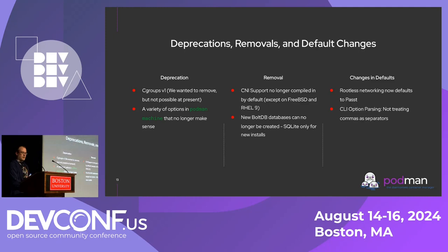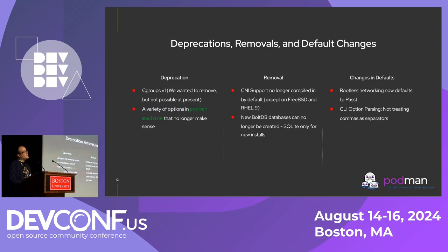We'll talk about Pasta in detail shortly. On CLI option parsing — this seems minor, but code-wise it's one of the largest changes, around 300 lines of diff. Basic summary: if you had a Podman option like `podman run -v`, you could previously specify multiple instances by comma-separating. We've changed that so it's no longer possible — now you have to do `-v volume1 -v volume2`. It's a disturbingly simple change, but also kind of necessary.